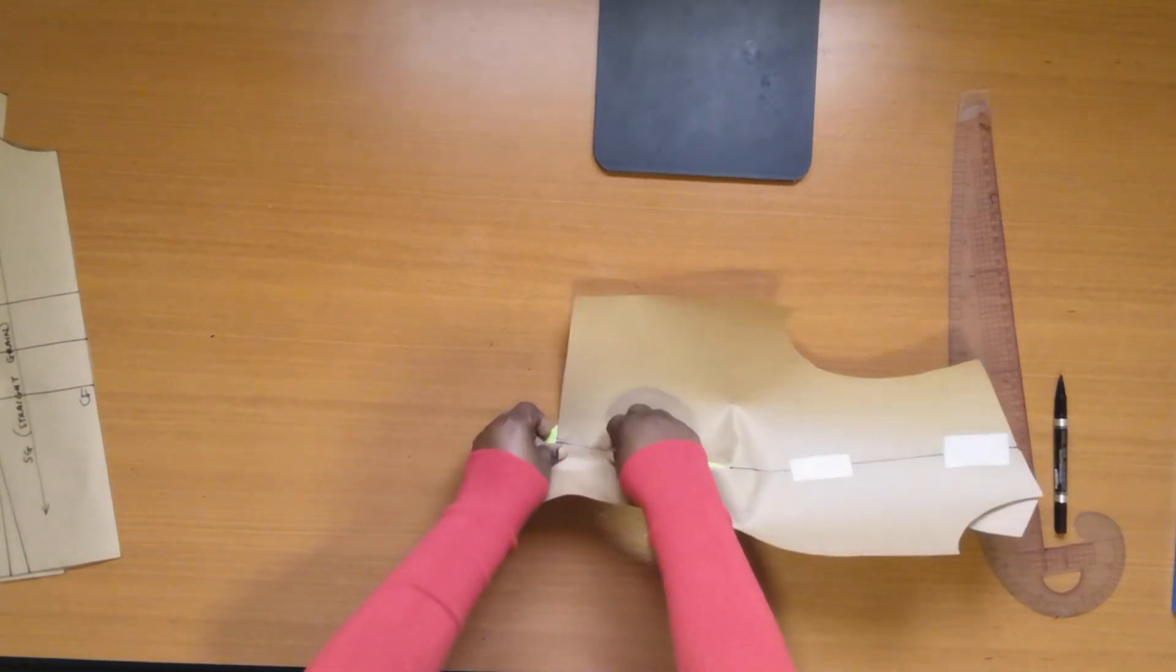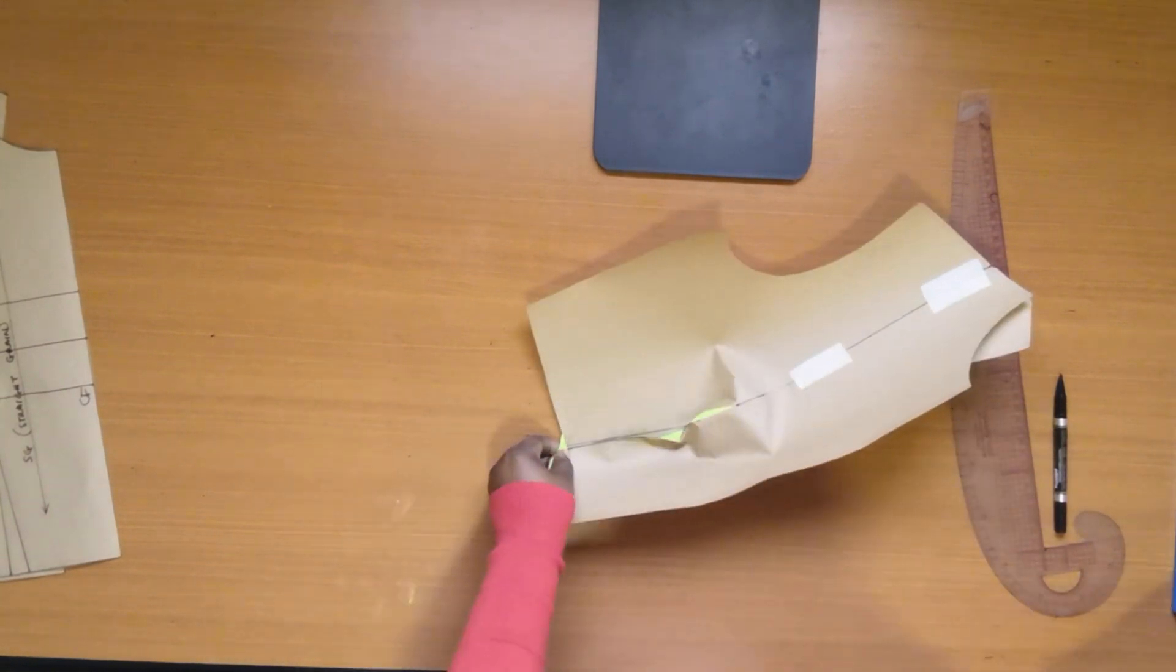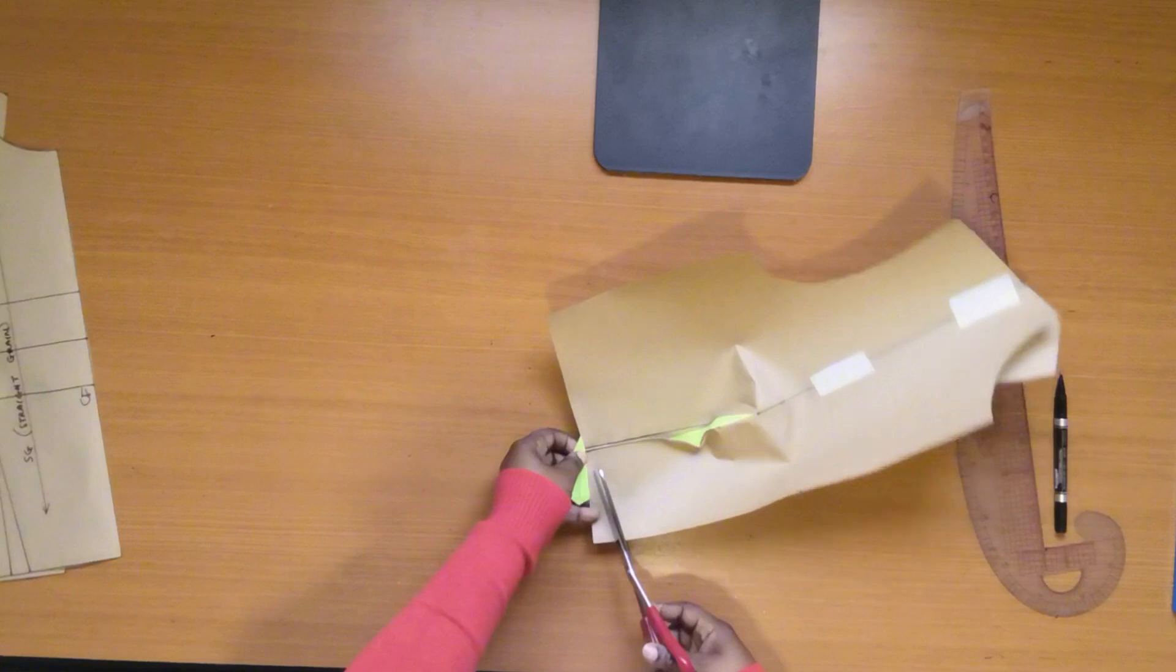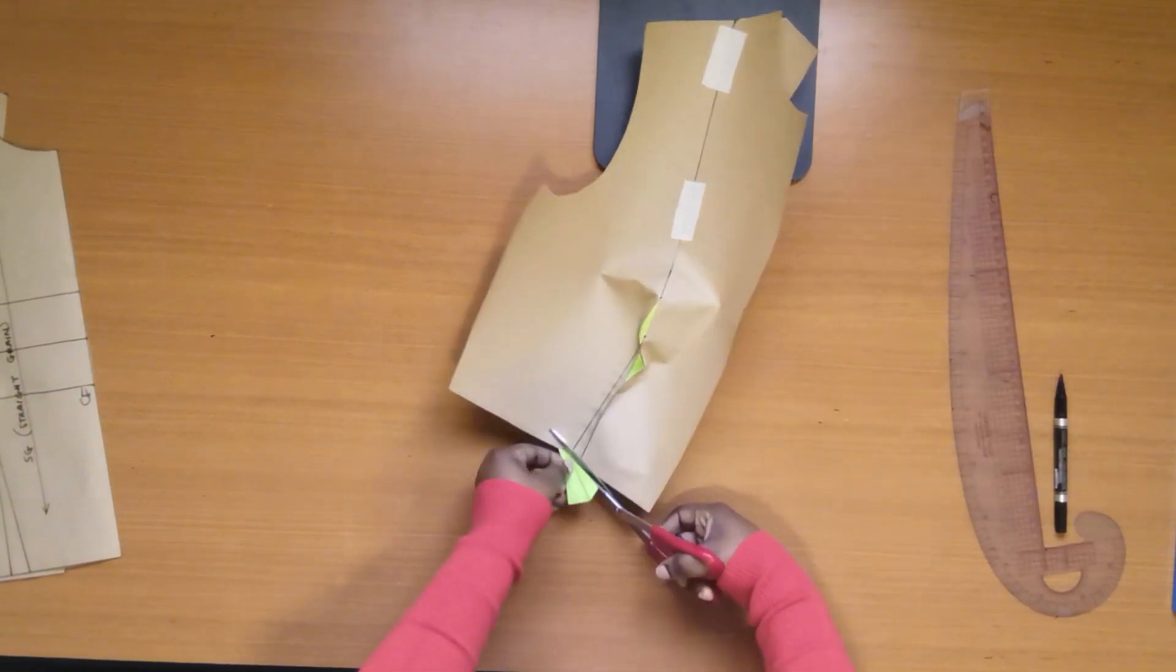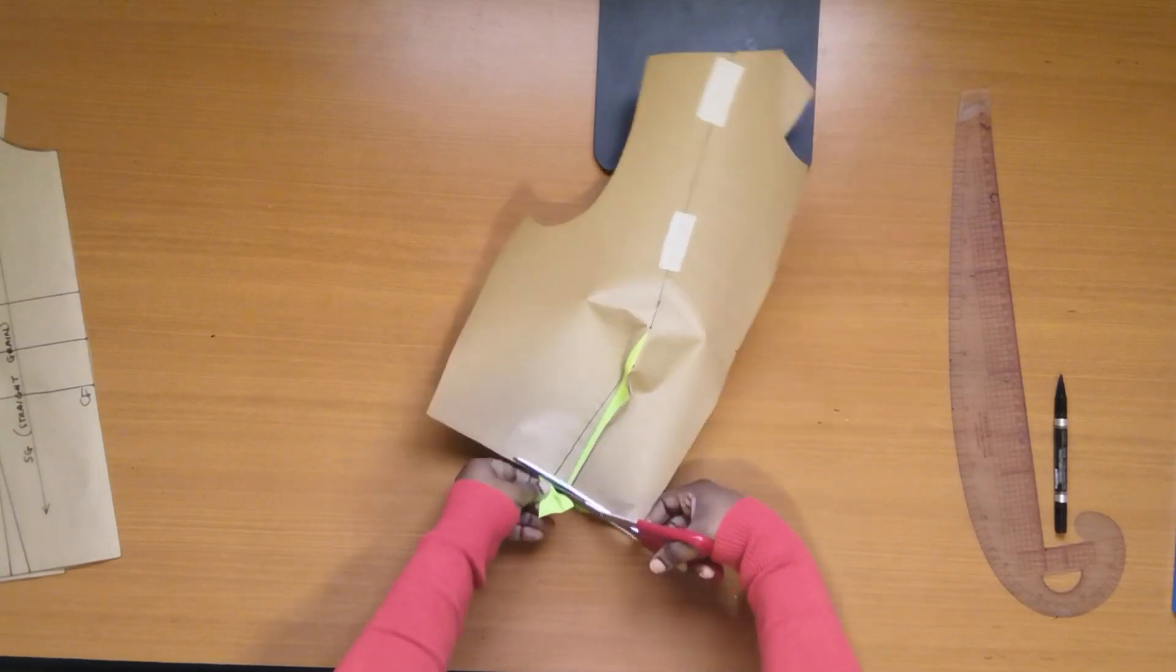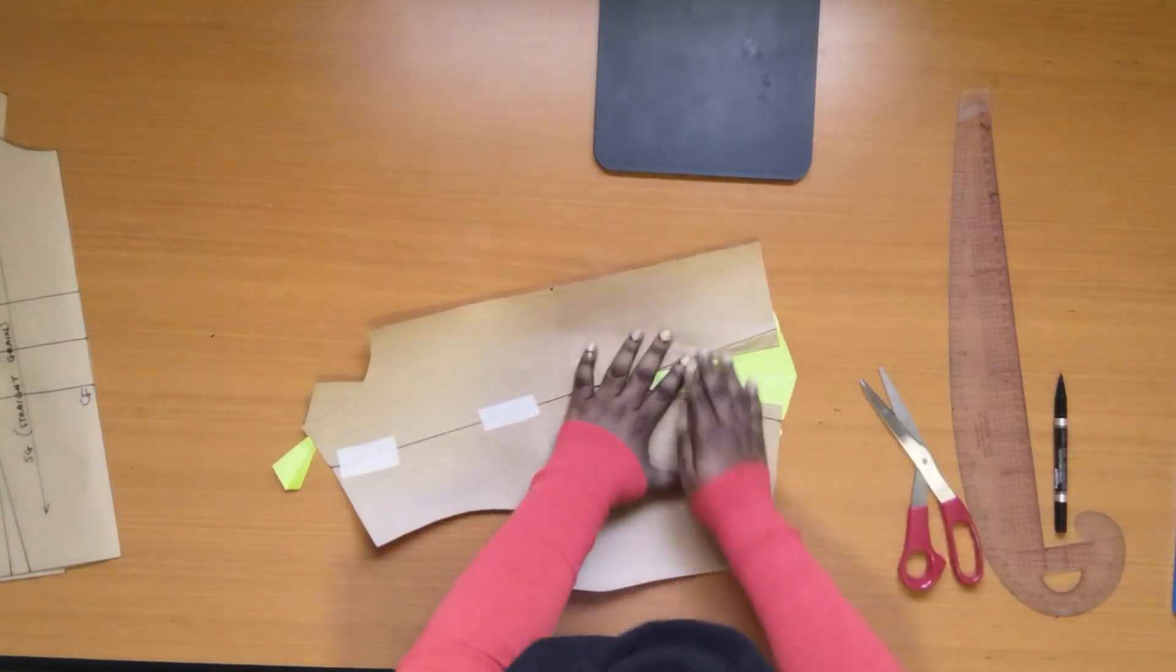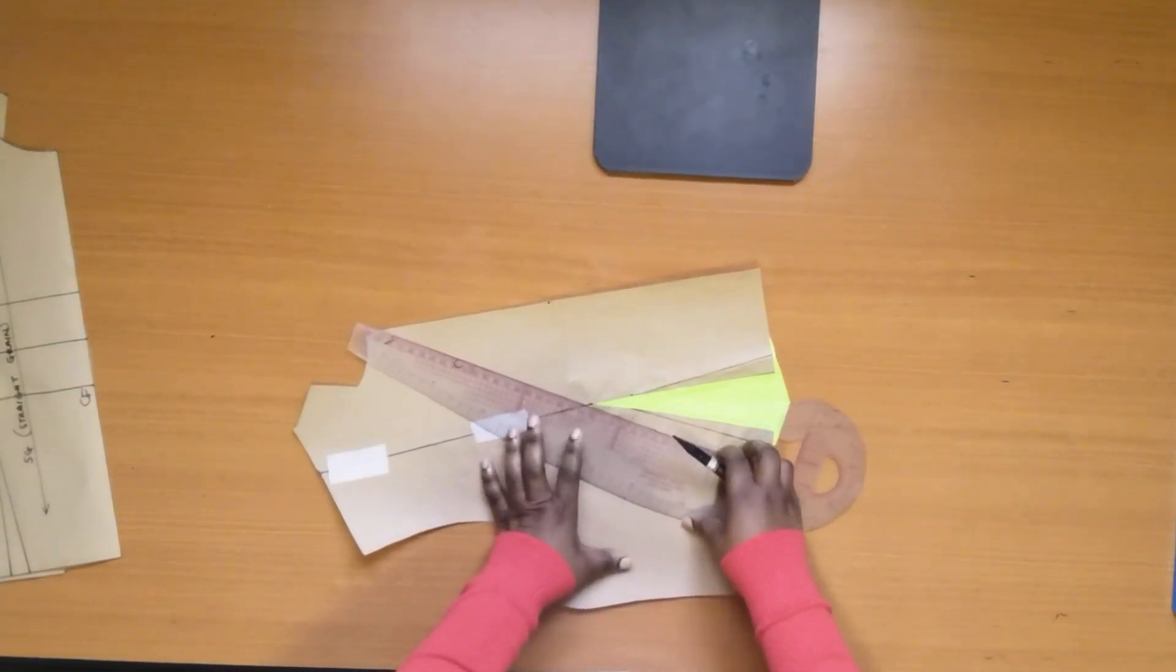Fold the dart facing the center front. Trim the excess paper. And the last step will be to move the dart away from the apex by 4 cm.